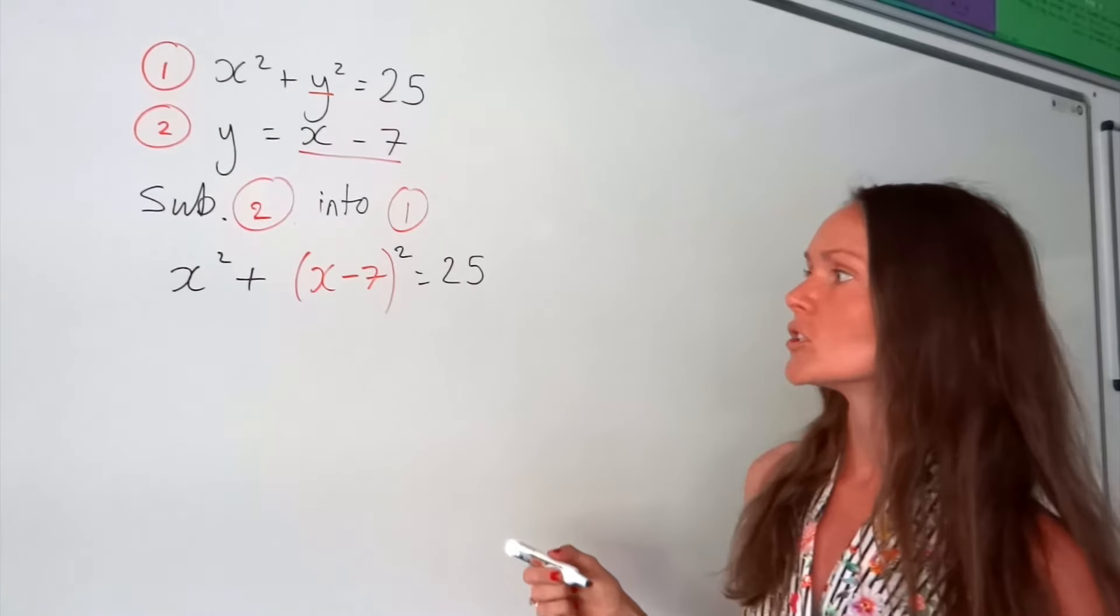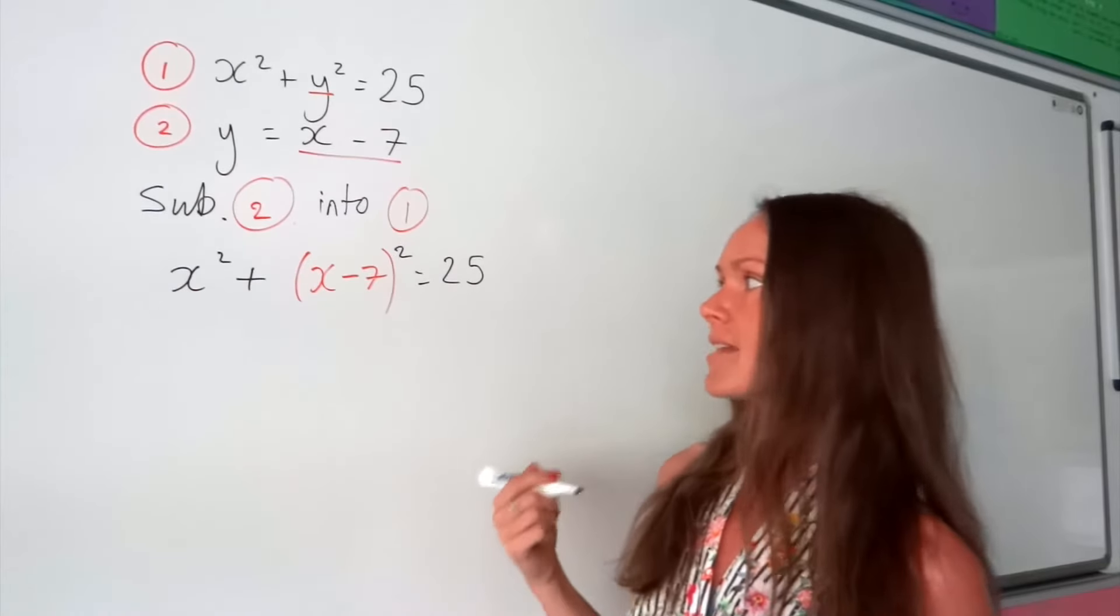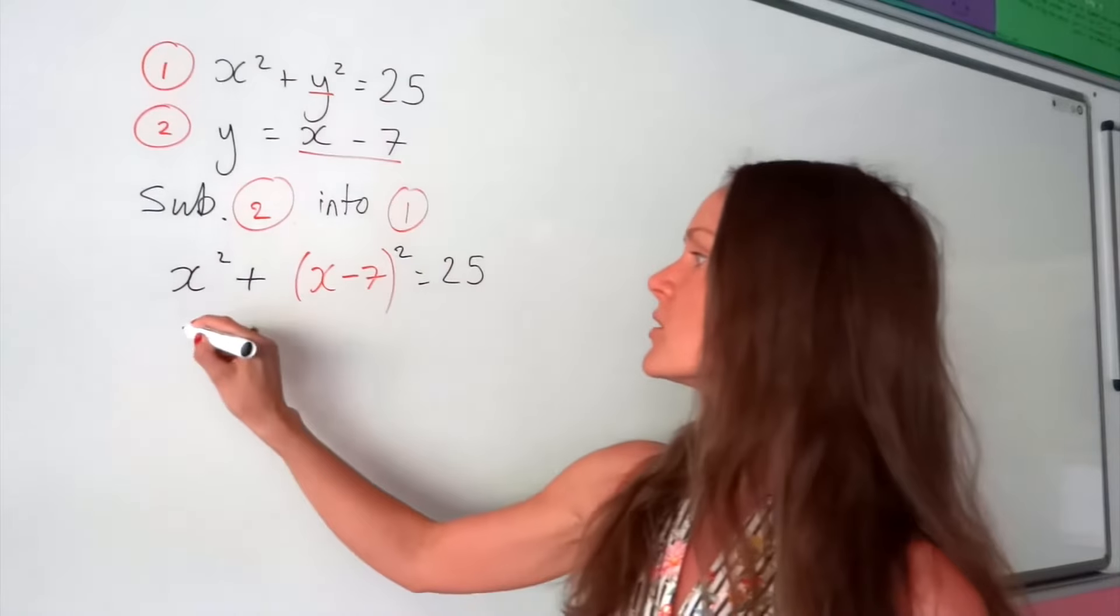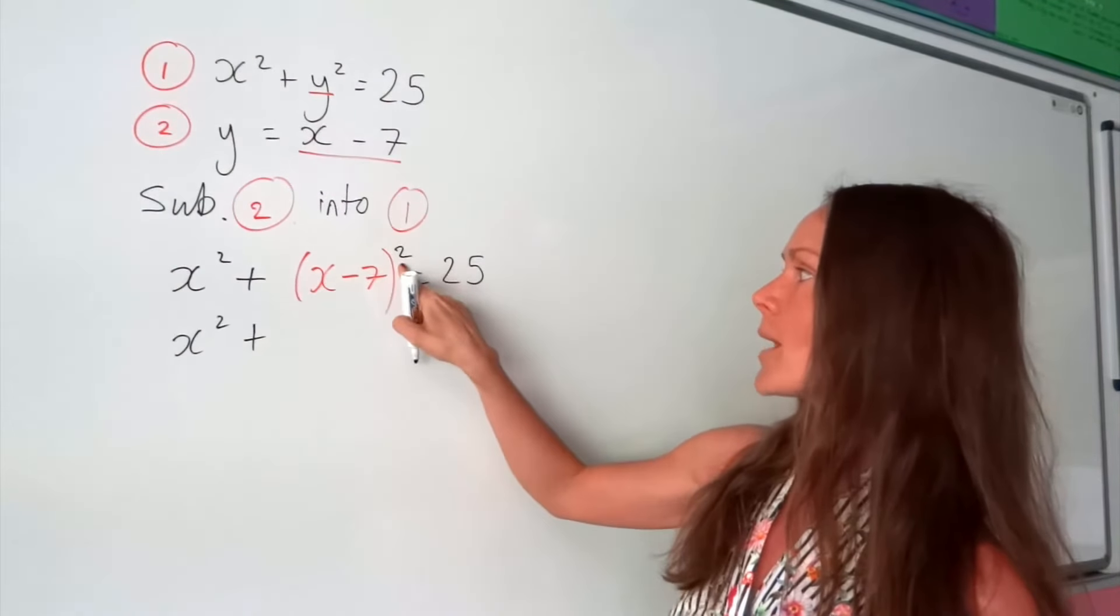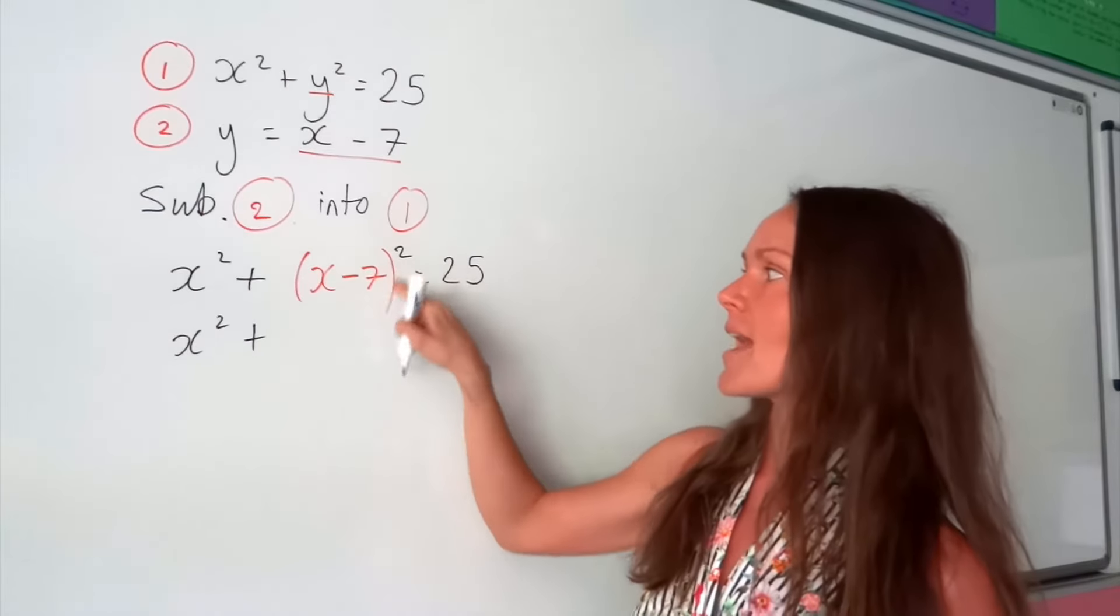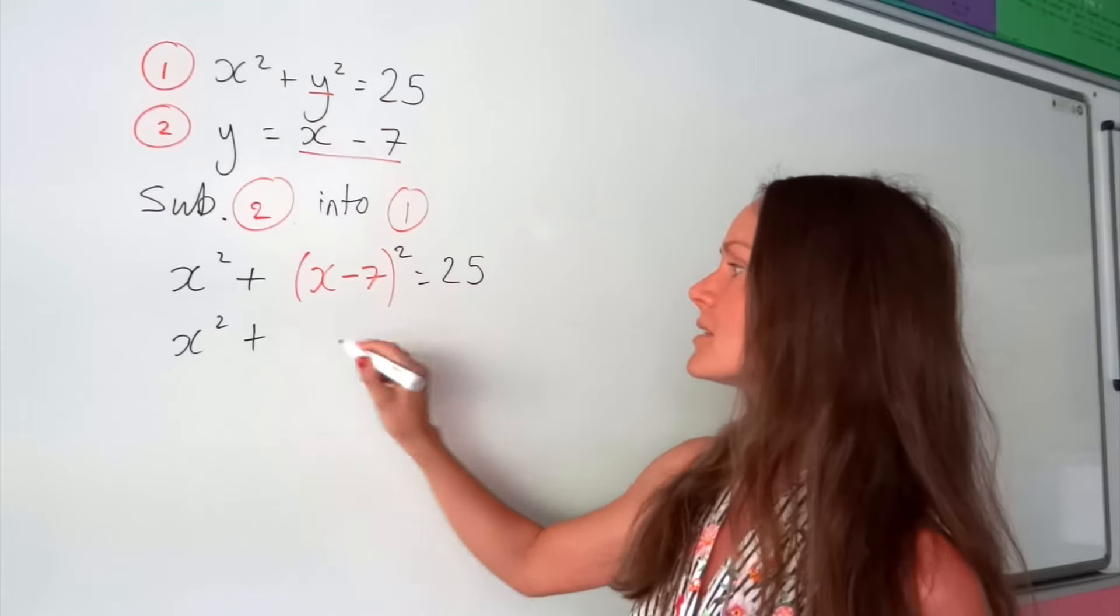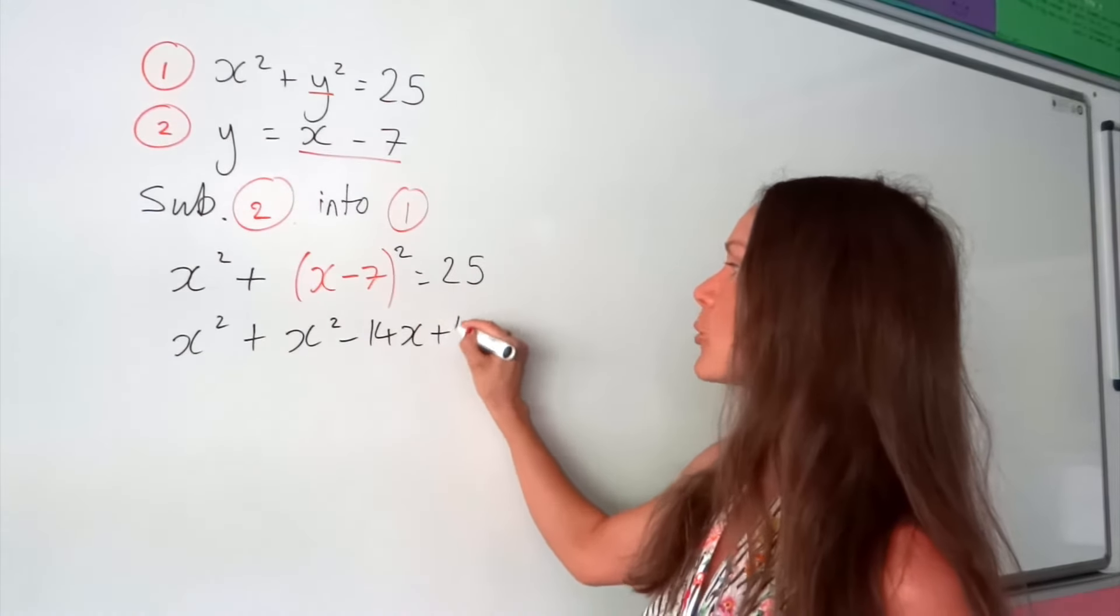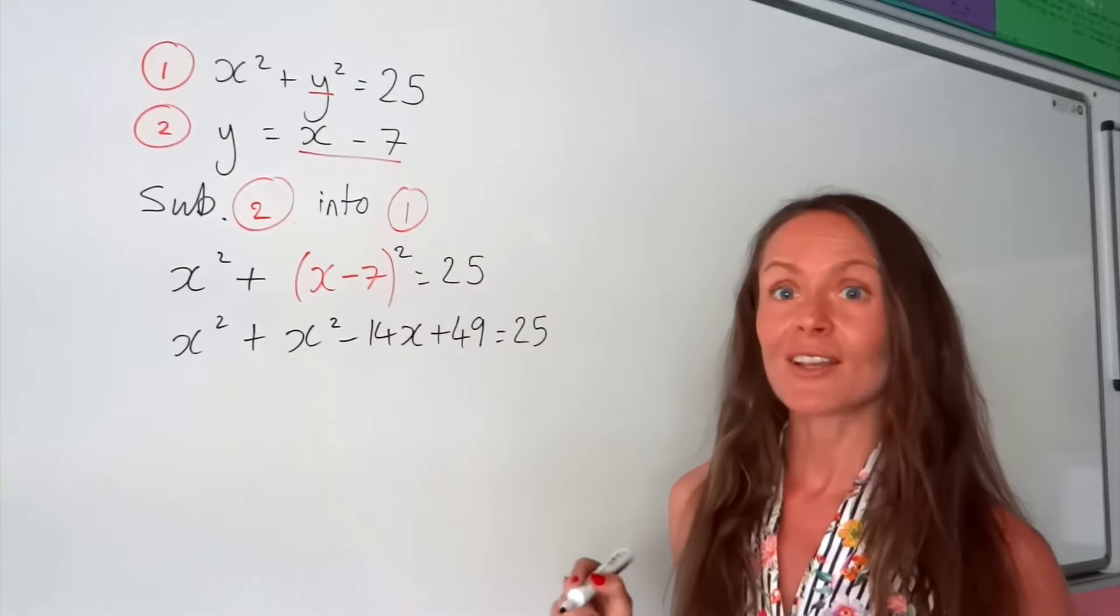Now I have an equation which only has x as the unknown, which is great. So I can solve this now to find x. I'm just going to work out what this comes to by expanding those brackets. So x minus 7 all squared - remember that's just the same as saying x minus 7 times x minus 7. So if you expand those brackets, you should get this. If you're not sure about expanding brackets, then that's something you should practice.